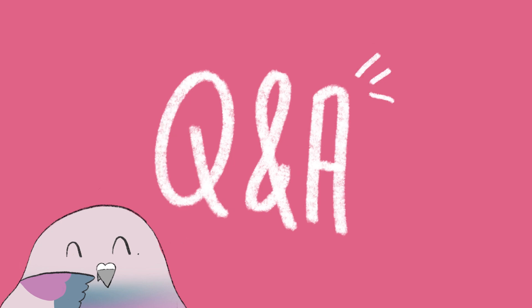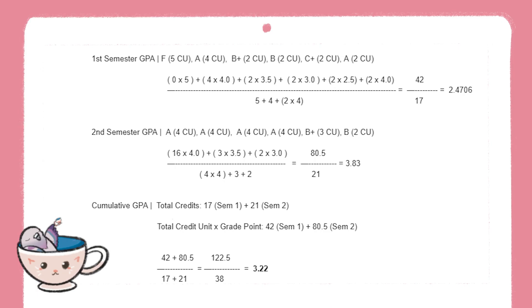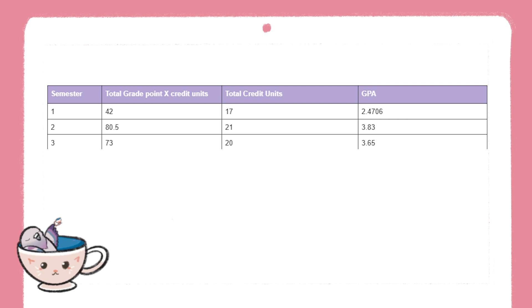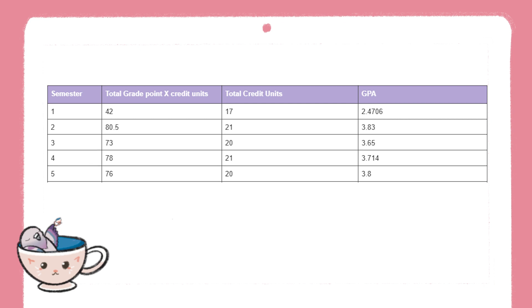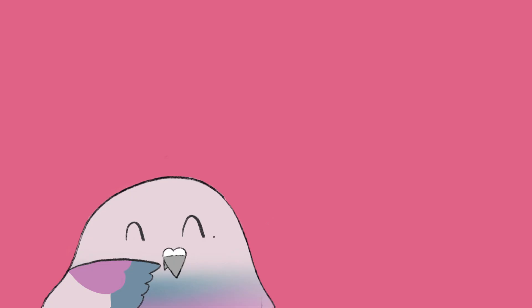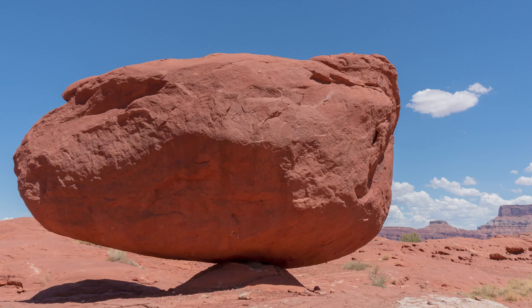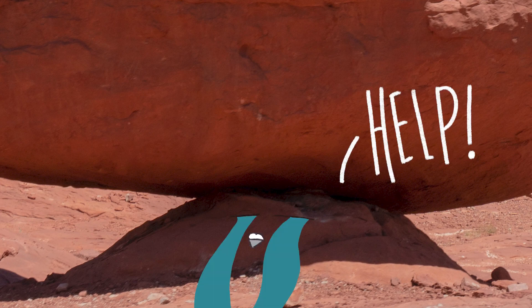So this brings up a question from the Q&A: if you scored badly for a semester, are your grades going to be recoverable? In this example, we started with a 2.4 and were able to pull it up within one semester to 3.22. If we continue the calculation and assume we are able to get above 3.6 for the next four semesters, we would get around 3.529, which is good enough to get into university. So I would say yes, GPA is sort of recoverable, but maintaining a high GPA for the rest of your semesters might be quite a challenge.